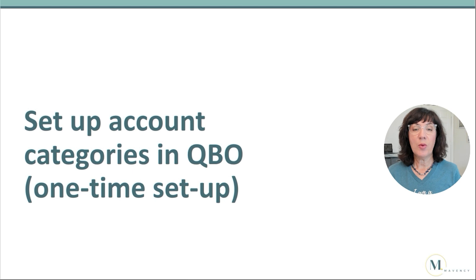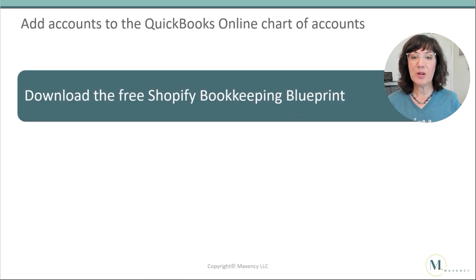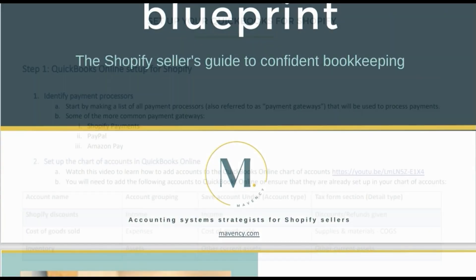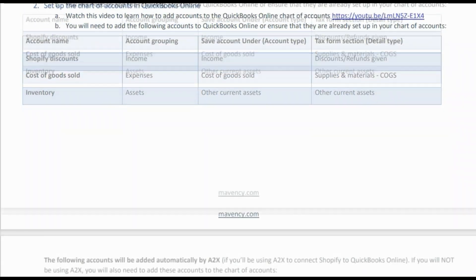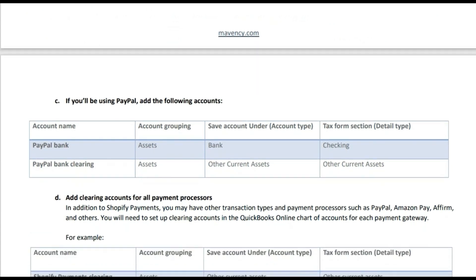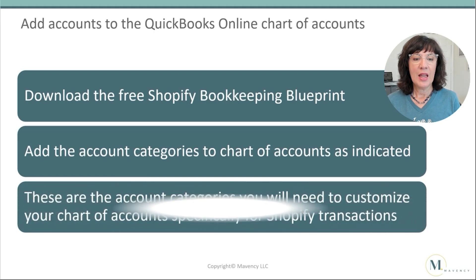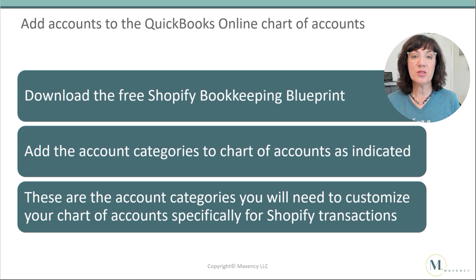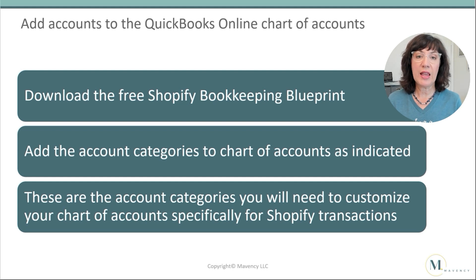Before we get started, we need to do a little setup in QuickBooks to set up the account categories we'll need. We're going to add accounts to the QuickBooks Online chart of accounts. Download the free Shopify bookkeeping blueprint — I've linked that in the description. It gives you the account categories you'll need to add to the chart of accounts specific to Shopify, since your QuickBooks chart of accounts will not have these categories until you add them.